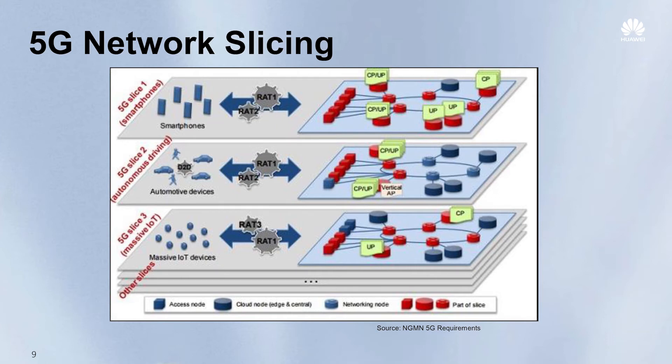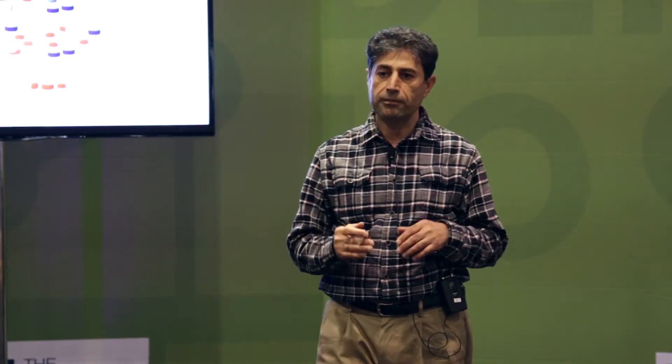One slice can be for ultra-short delays, another for high bandwidth, another designed for high scale. For example, in a stadium the number of users can fluctuate from a few to tens of thousands within an hour, and all those users want to download videos — so it has to scale up very fast and the slice has to be optimized for that. The orchestrator has to support scale, different parameters, and it has to do it fast.